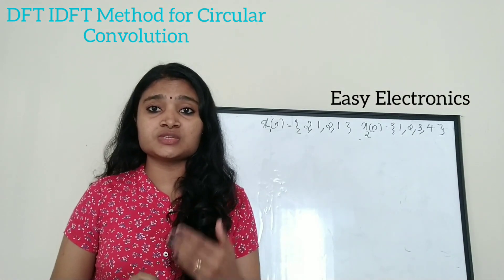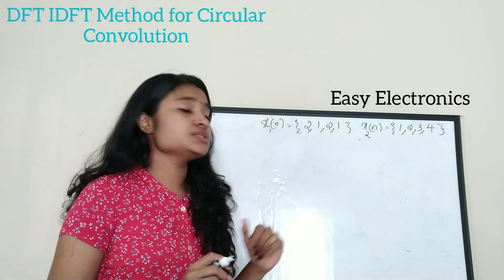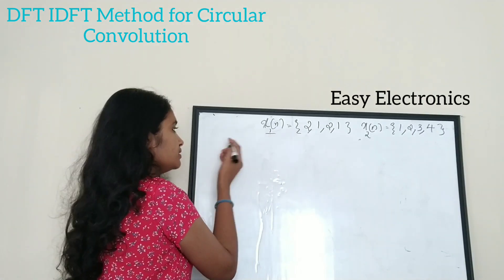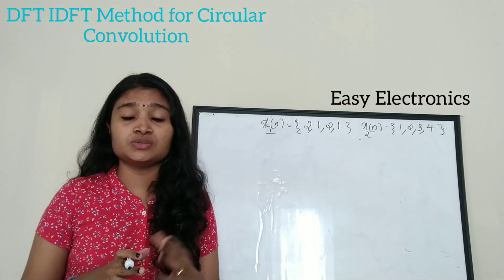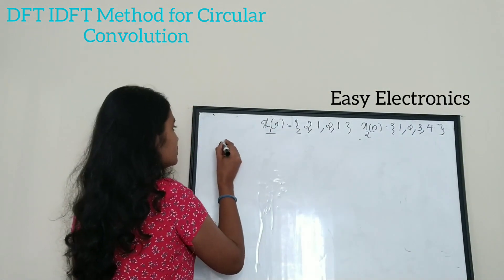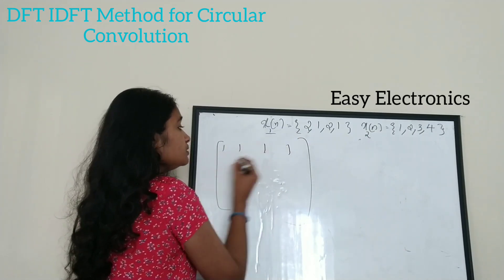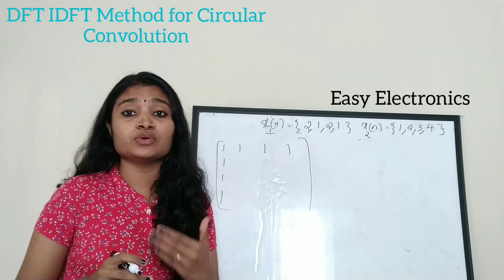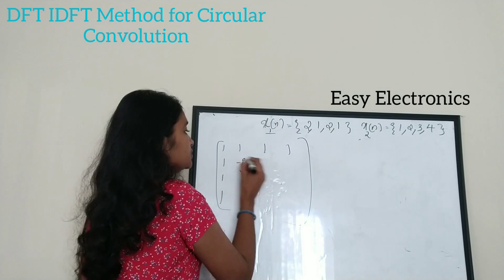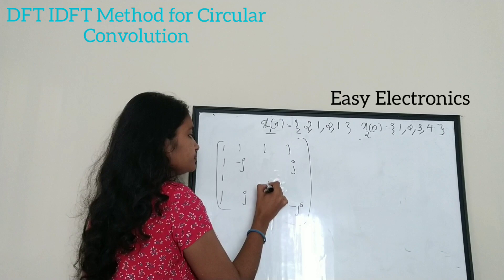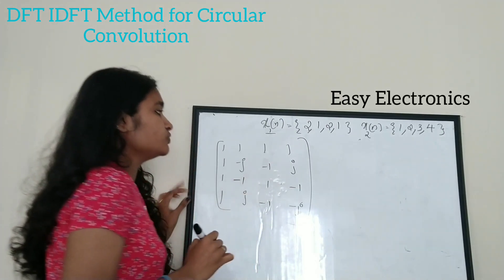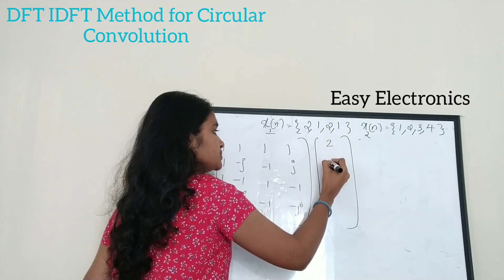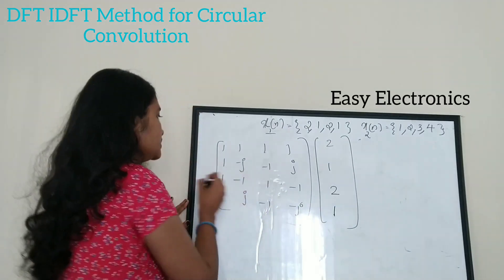I am going to find the DFTs of x1(n) and x2(n). First I will find X1(k), the DFT of x1(n). To find the DFT, you can use the DFT matrix method — very clearly explained in my previous video. This is the DFT matrix for a four-point input, and I am multiplying it with the input sequence x1(n) = [2, 1, 2, 1], which will give X1(k).